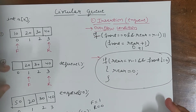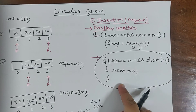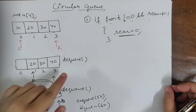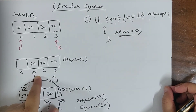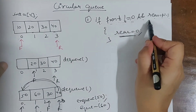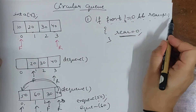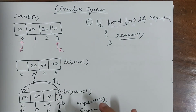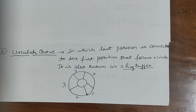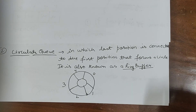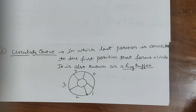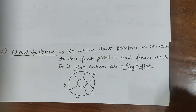You can explain this in the exam: dequeue the front — front becomes 1. Front is not equal to 0, and rear equals n minus 1, so set rear equal to 0 and point like this. The definition: circular queue is a queue in which the last position is connected to the first position, forming a circle. When rear reaches n minus 1, it goes back to 0, and it is also known as a ring buffer.